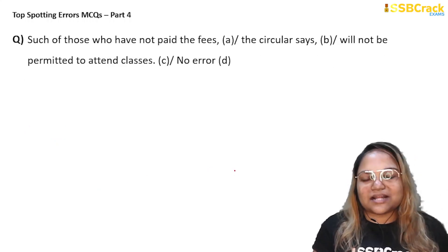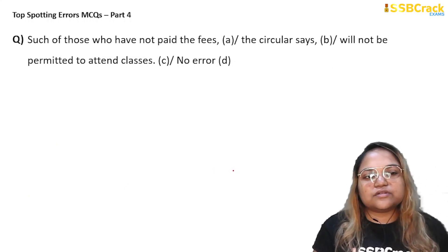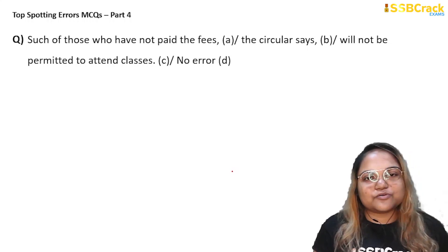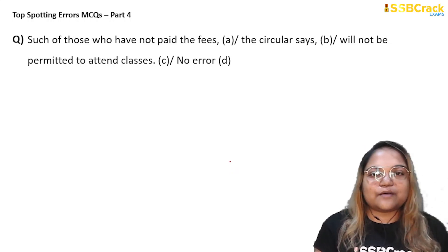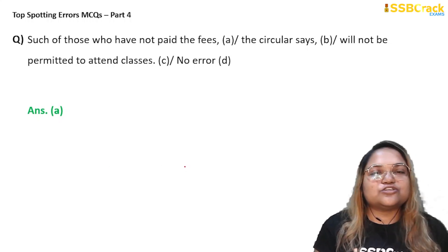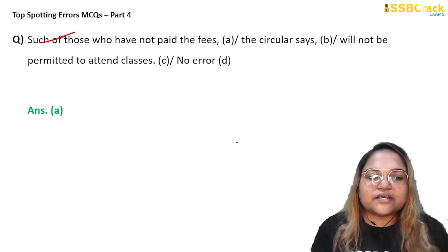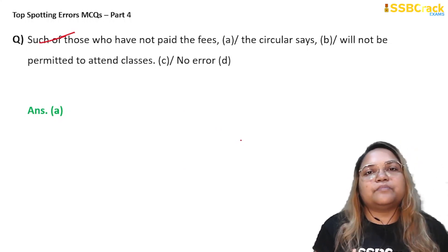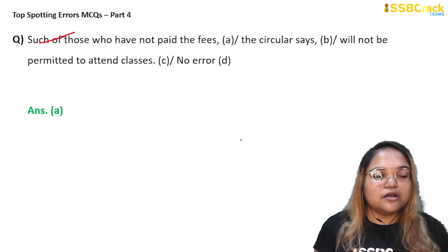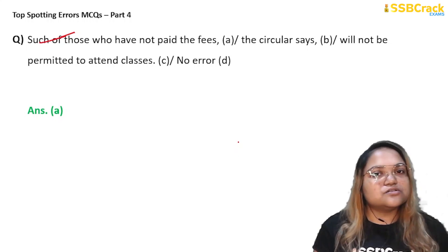Last question of this session: 'Such of those who have not paid the fees, the circular says, will not be permitted to attend classes.' The error is in part A. 'Such of those' is incorrect and superfluous — we do not need 'such of.' We can simply say 'those who have not paid the fees, the circular says, will not be permitted to attend classes.' The phrase 'such of' is unnecessary here. Answer: option A.